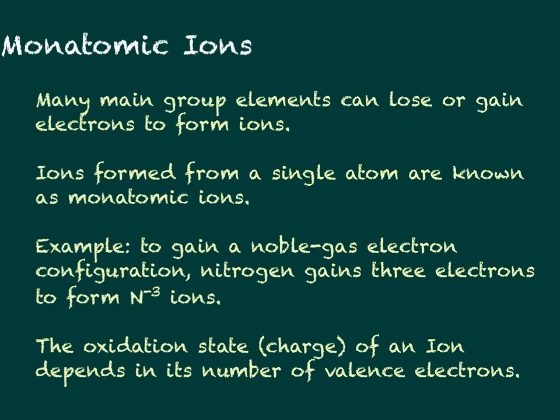Many main group elements lose or gain electrons to form ions. If the ions are formed from a single atom, it's known as a monatomic ion. Mono, remember from your biology class, is a prefix meaning one. So monatomic ions means it's an ion made up from one atom.